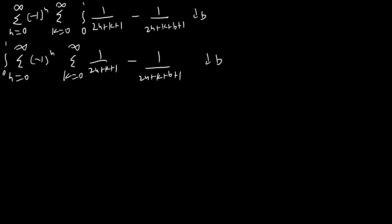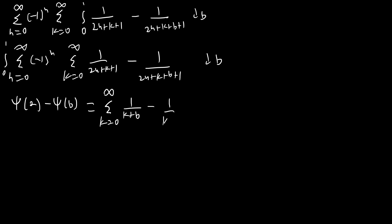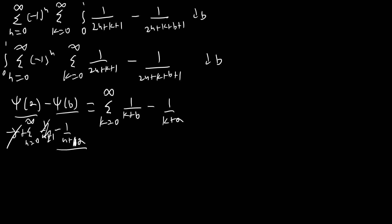Now I'm going to use a straightforward identity: digamma of a minus digamma of b equals the sum from k equals 0 to infinity of 1 over k plus b minus 1 over k plus a. The justification is that each digamma expands as negative gamma plus a sum, the gammas cancel, and we're left with the k plus a and k plus b terms. I'm going to use this formula several times during this derivation.